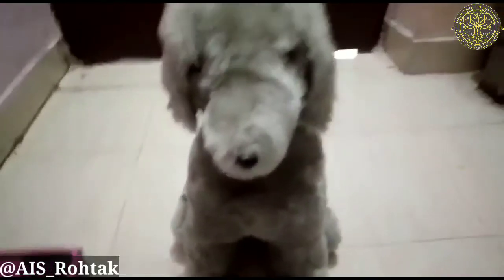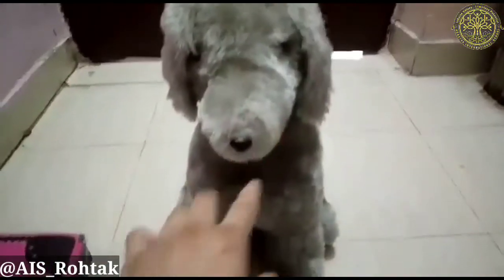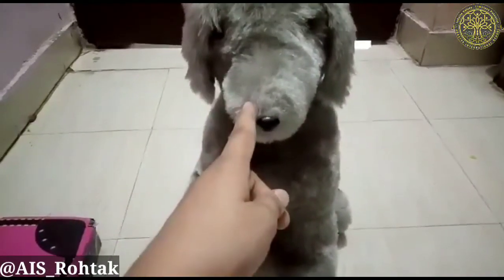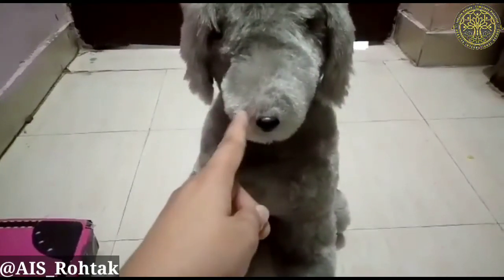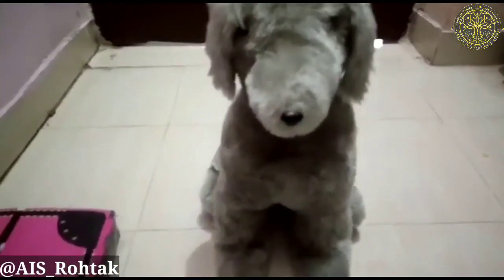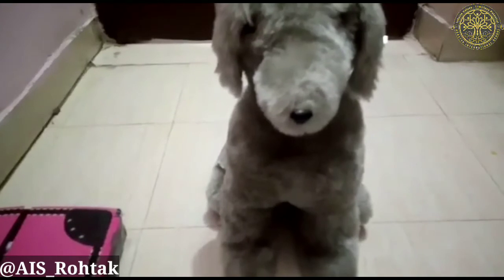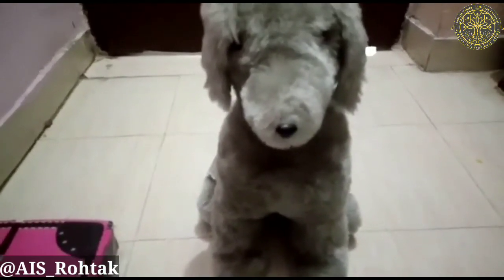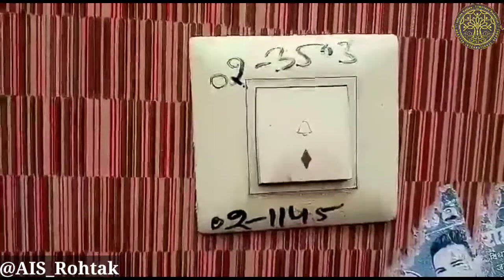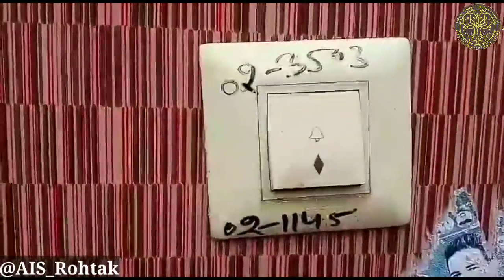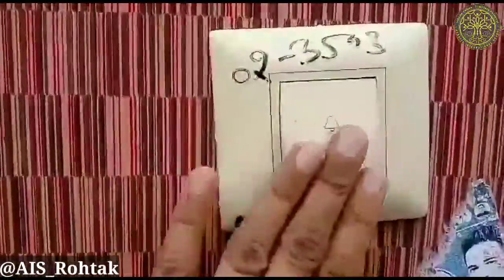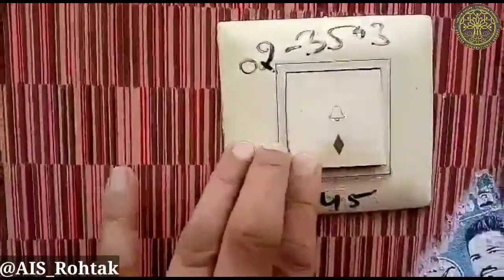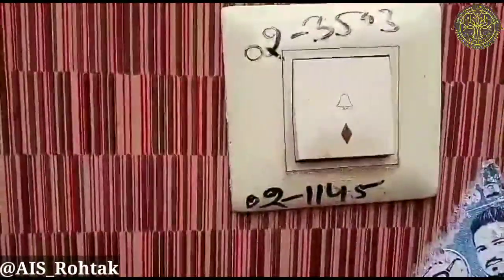And this one also — this is a dog. D, D, D — dog. Can you see this? This is a doorbell — D is for the doorbell.